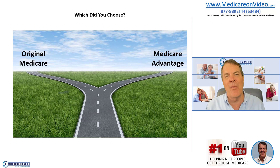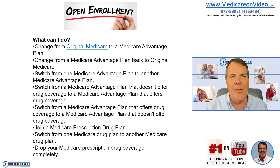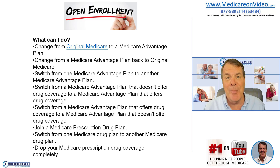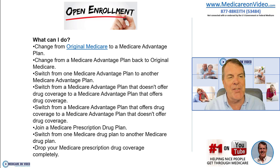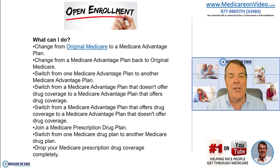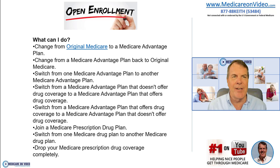Open enrollment primarily deals with Medicare Advantage. Here's what Medicare.gov says you can do: change from original Medicare to a Medicare Advantage plan; change from Medicare Advantage back to original Medicare; switch from one Advantage plan to another; switch between Advantage plans with and without drug coverage; join a Medicare drug plan; switch from one drug plan to another; or drop your drug plan completely.